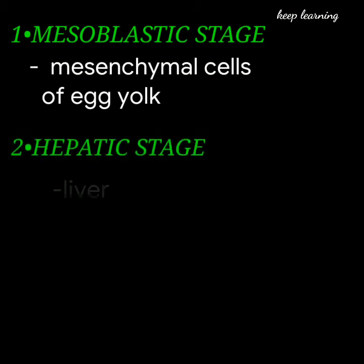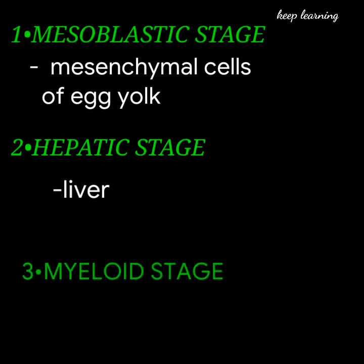After three months, that is the second trimester of intrauterine life, RBCs are produced from the liver. This is called the hepatic stage. Next is the myeloid stage, in which RBCs are produced from the bone marrow. This stage occurs during the last three months, that is the third trimester.